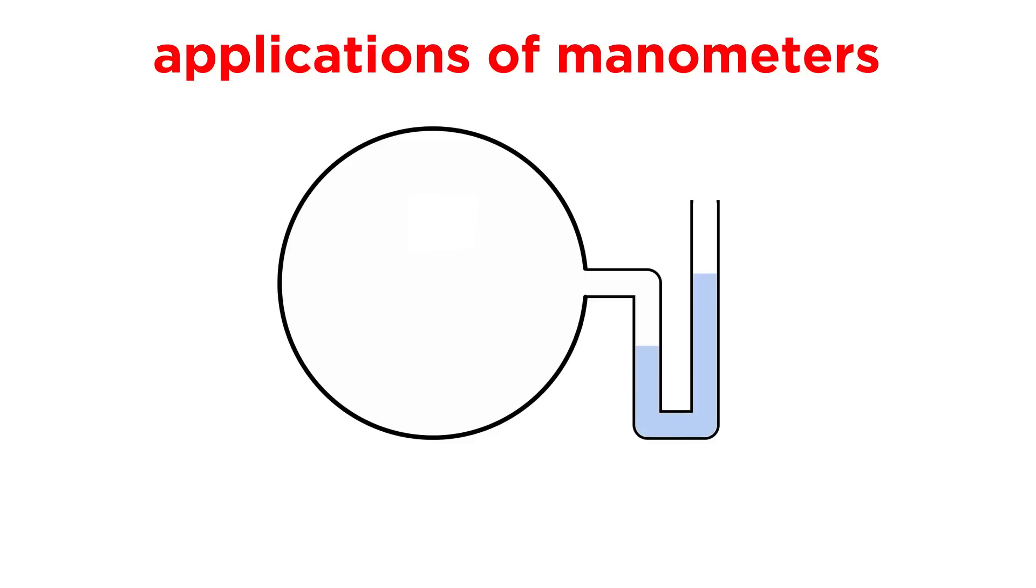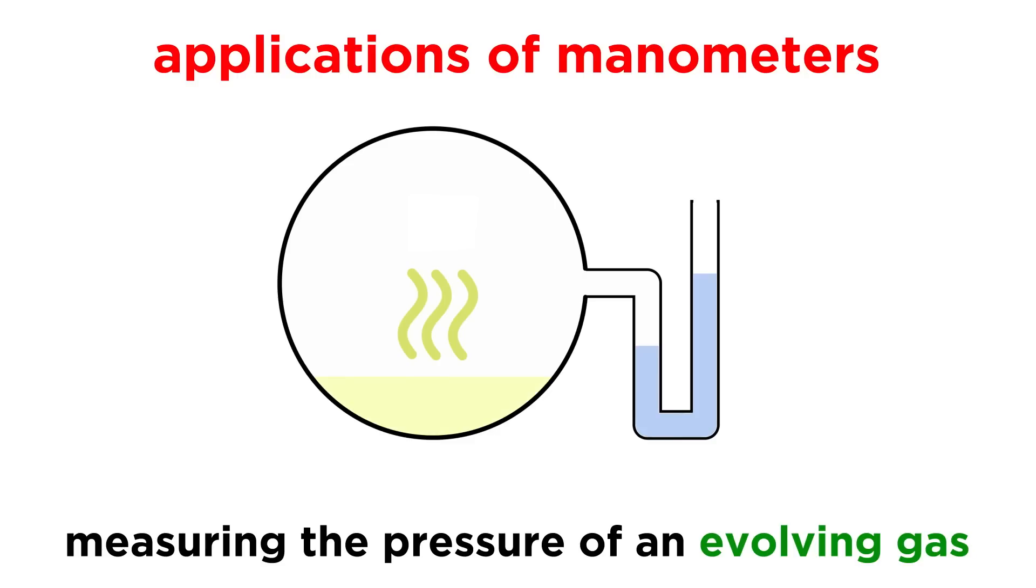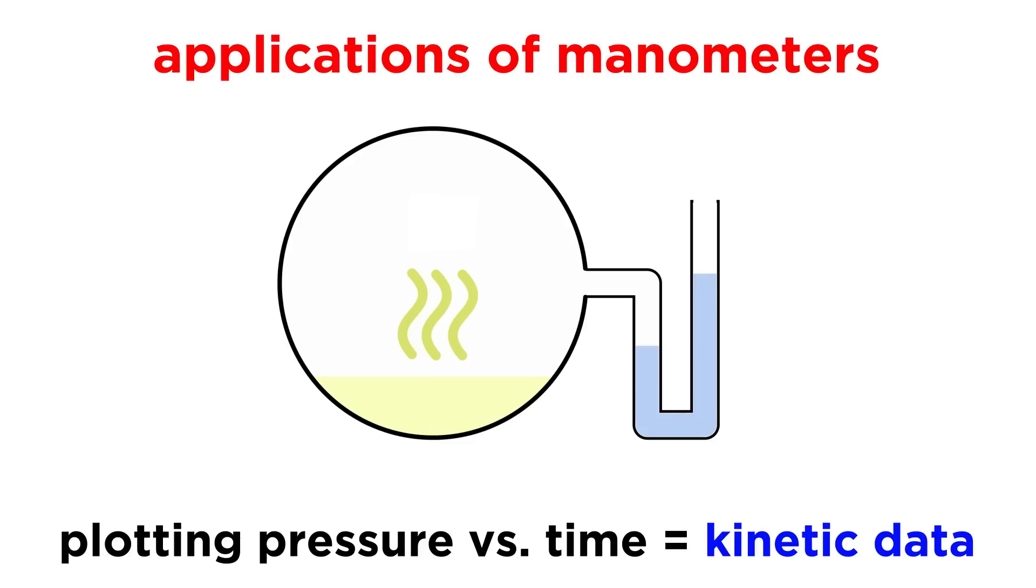These kinds of devices have an extremely practical application, and that involves measuring the pressure exerted by a gas that is evolving from a chemical reaction. Plotting this pressure over time allows us to do kinetic studies on any reaction that involves a gaseous product.